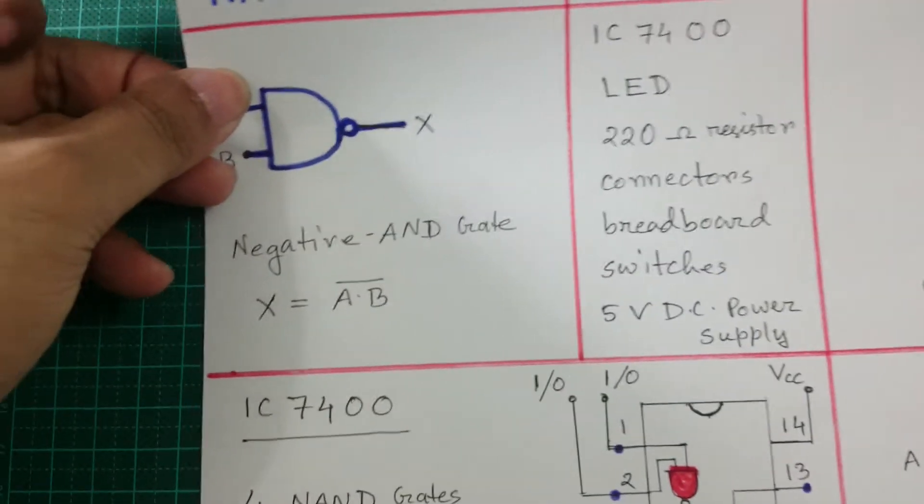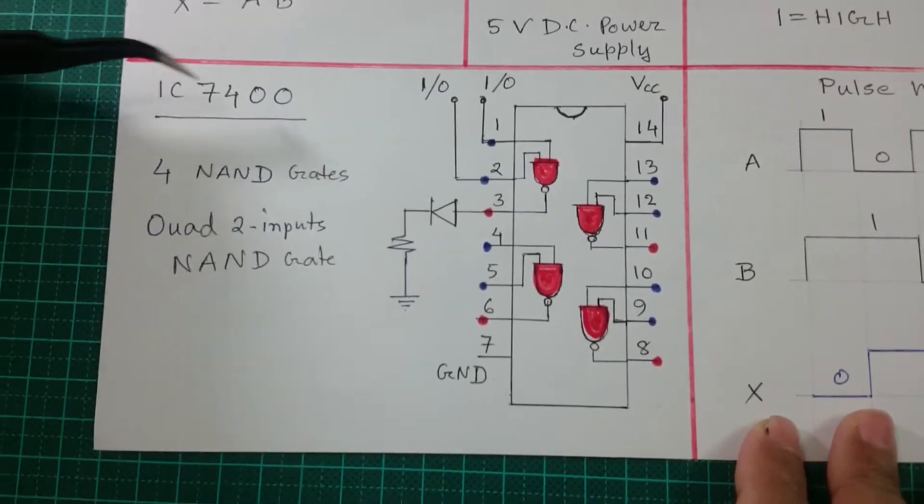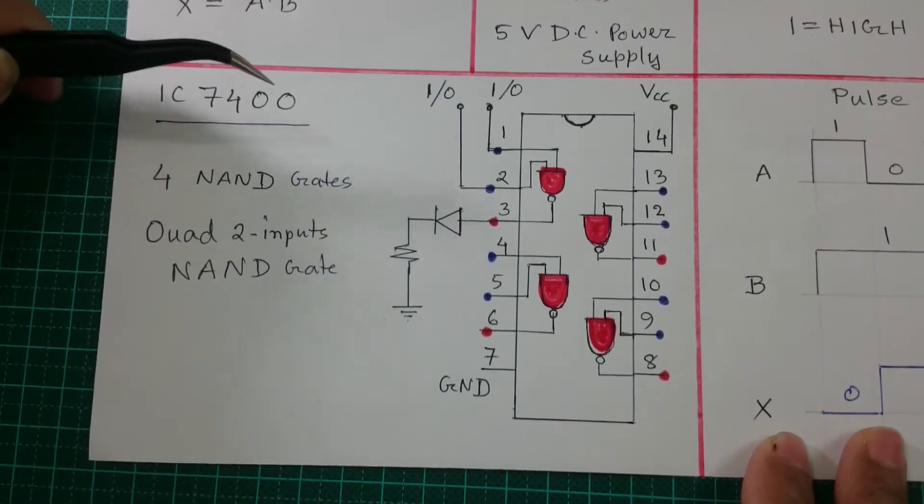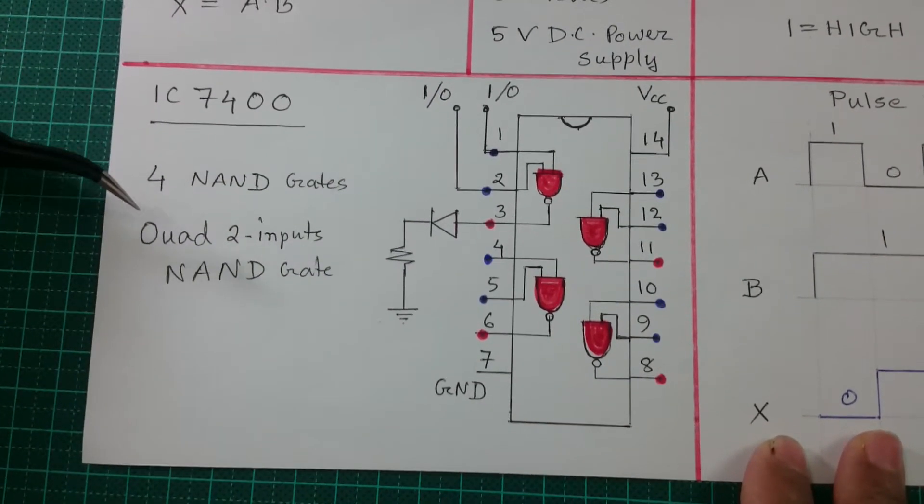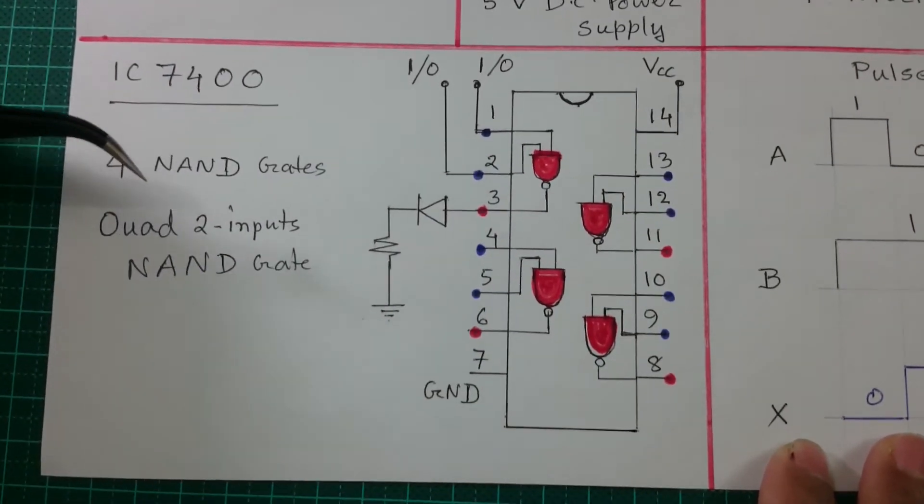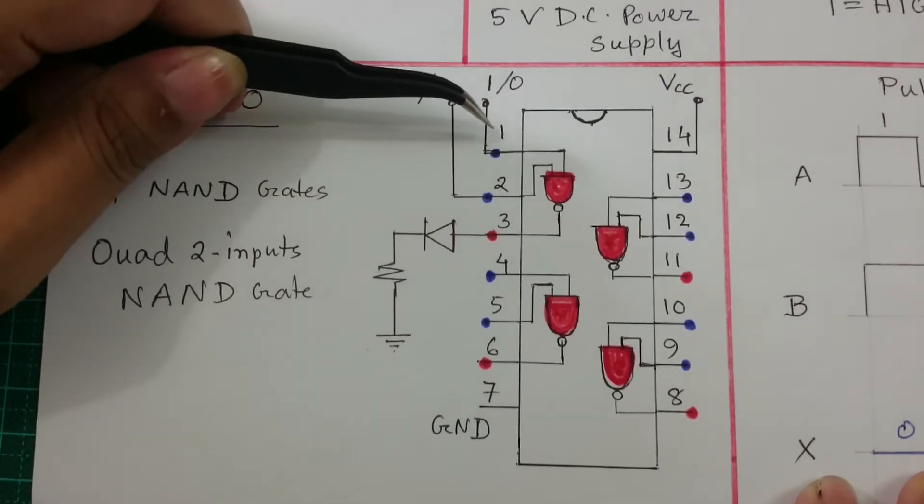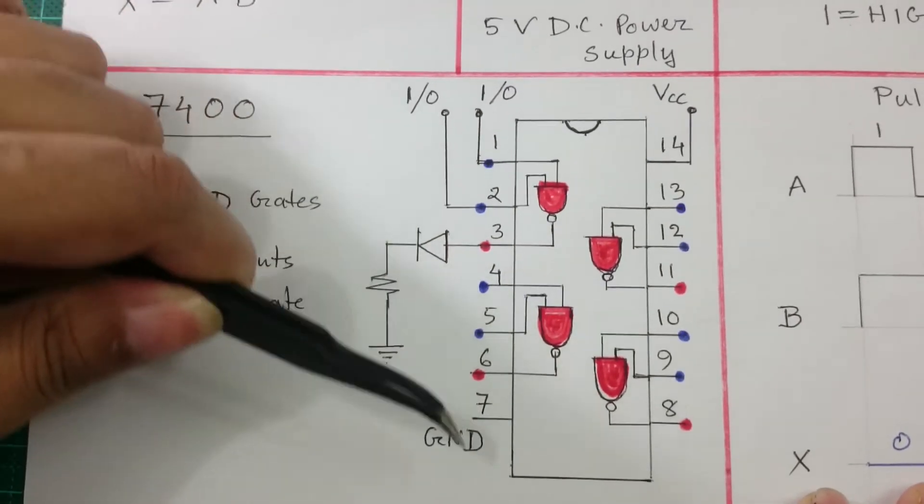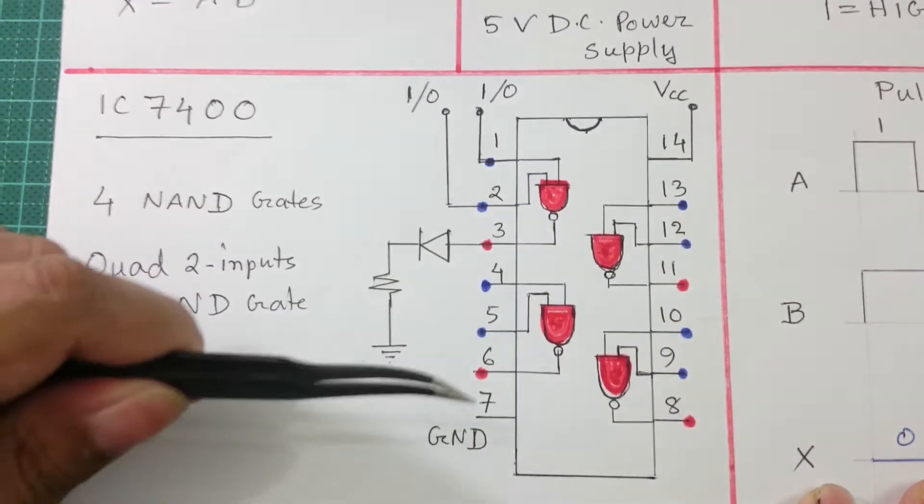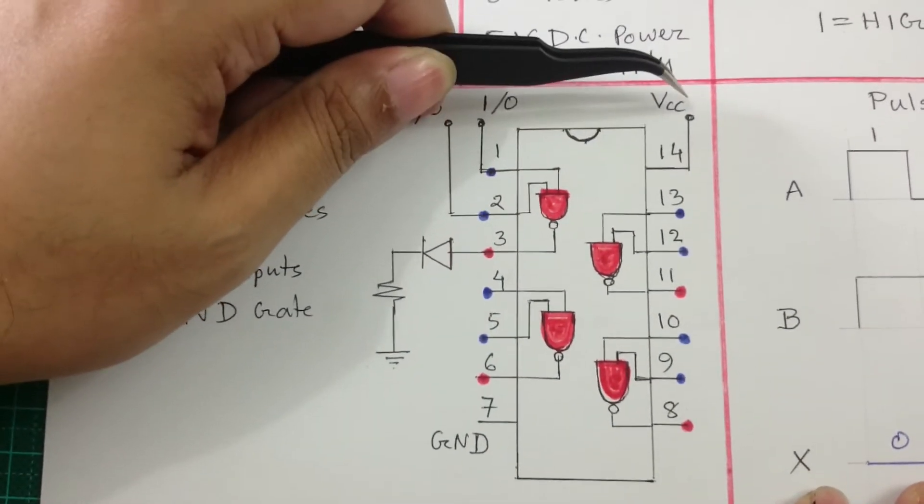Before going to my circuit, let me explain the pin diagram of IC 7400. It is a 4 NAND gate IC, also called a quad 2-input NAND gate. It has pins numbered 1 through 14, where pin 7 is connected to ground and pin 14 is connected to VCC.